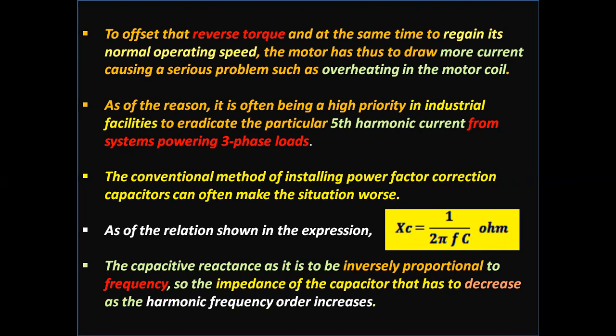The conventional method of installing power factor correction capacitors can often make the situation further worse. From the expression XC = 1/(2πfC) ohms, the capacitive reactance is inversely proportional to frequency, so the impedance of the capacitor decreases as the harmonic frequency order increases.